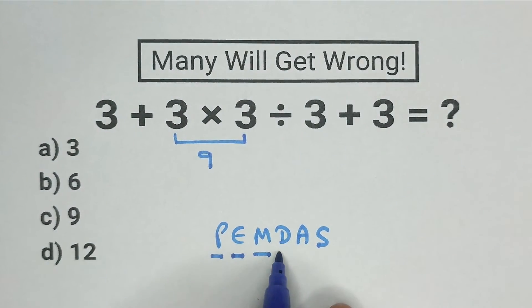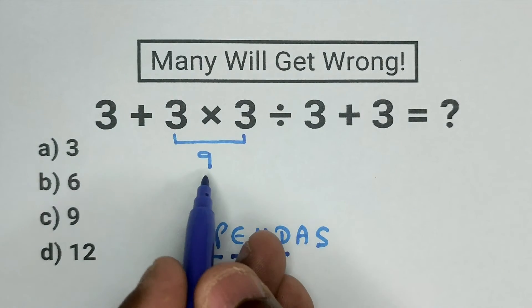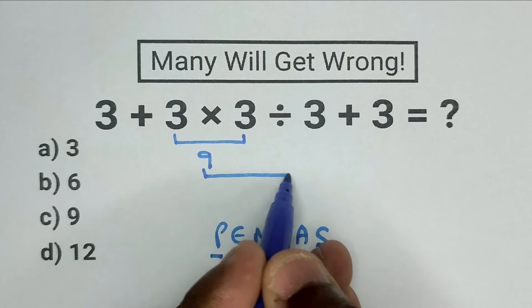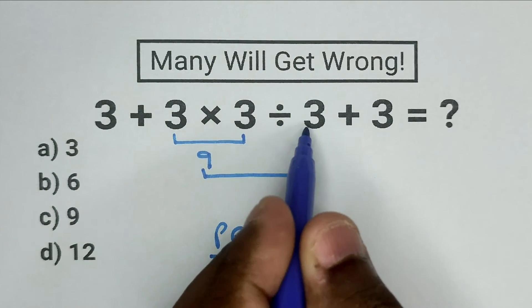Next, we have D, division and here we have 9 divided by 3. So, we have to do this next. 9 divided by 3 is 3.